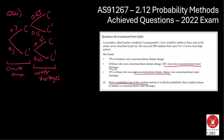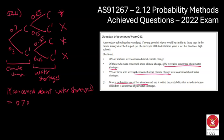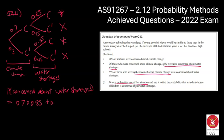So we've drawn the tree. We now need to find the probability that someone is concerned about the water shortages. There are two branches that lead to being concerned about water shortages, so we multiply along each branch and add them together. That's 0.7 times 0.85, plus 0.3 times 0.55. Adding those together, I got a probability of 0.76. So roughly three quarters of these 200 students were concerned about the water shortages.